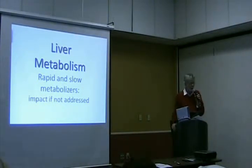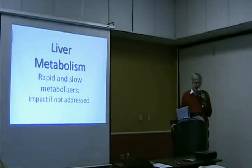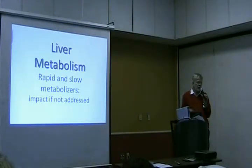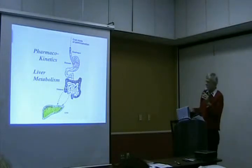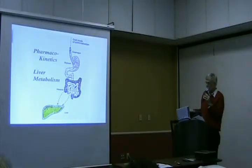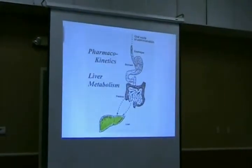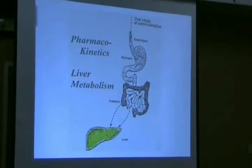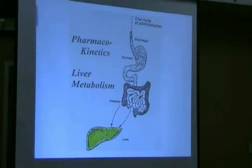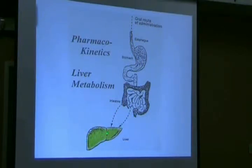Liver metabolism — rates of liver metabolism matter a lot. Almost all these drugs rely heavily on the liver to metabolize them. Some metabolizing occurs in the bloodstream and some in the gut, but mainly it's the liver. Once the drug has been liquefied, before it goes into general circulation it goes through a small portal system directly to the liver. The liver is the great metabolizing organ and the guardian of the body against potential toxins. Whatever drugs you're taking are going to be subject to what's called first pass metabolism.